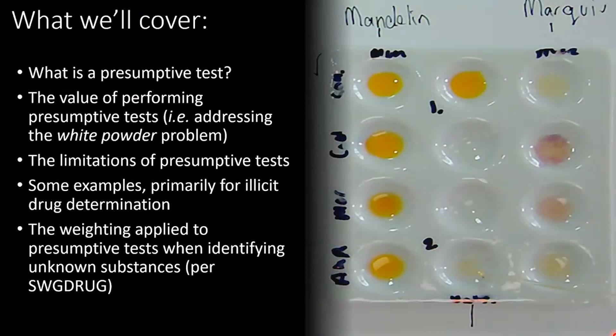We're going to be covering what a presumptive test actually is, then we're going to go into the value of performing presumptive tests mainly through the lens of combating the white powder problem. We're then going to talk about the limitations of presumptive tests as well as give some examples primarily for illicit drug determination. Finally, we're going to quickly discuss the weighting that's applied to presumptive testing when applied to unknown substances, per the Swage Drug Guidelines for best practices when analysing drug samples.